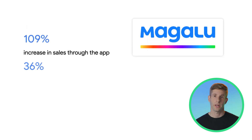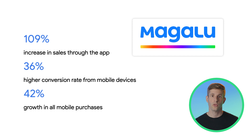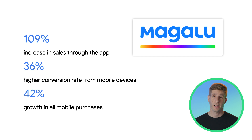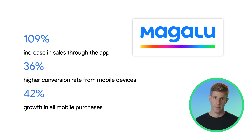Lastly, Magalu, a Brazilian retail company, decided to prioritize their mobile business due to the growing popularity within high lifetime value customers. They implemented deep links and saw a 109% increase in sales through the app, a 36% higher conversion rate for mobile devices, and 42% growth in all mobile purchases.